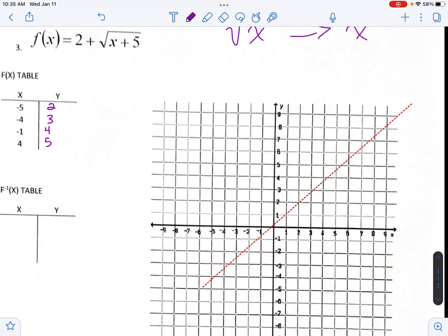Now we're ready to plot our points. Negative 5, 2. Negative 4, 3. Negative 1, 4. Then over 4 and up 5. And this guy just kind of shoots to the right. Now when we do our reflection, we should have something over in this area here that looks like that.